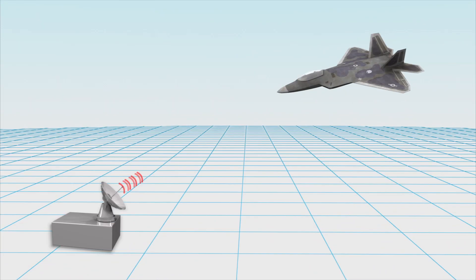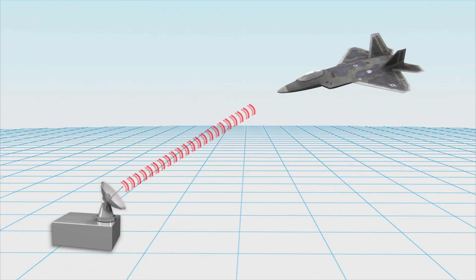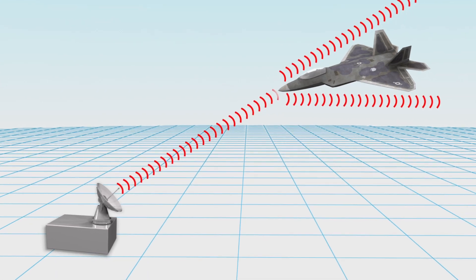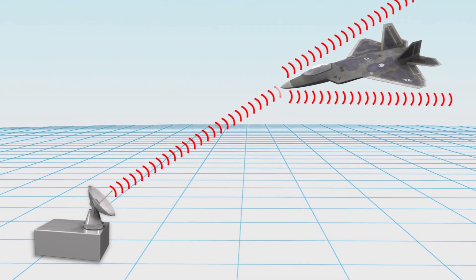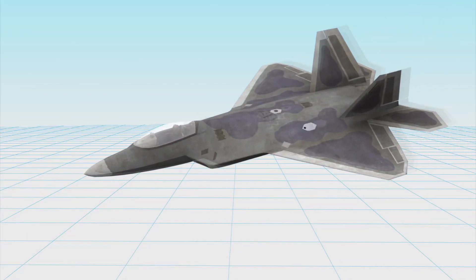Features such as heat-absorbing surface materials, smooth surfaces and hidden engines render stealth fighter jets such as the F-22 undetectable by conventional radar. However,